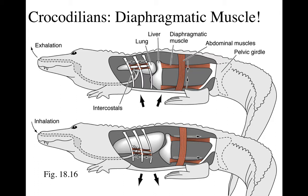Then we have crocodiles, which are really amazing. They do not have a mammalian diaphragm, but sometimes they can really put out bursts of energy. What they have is called a diaphragmatic muscle — and you'll never believe it — it's attached to the liver. The liver is what they use to expand their lungs. When they want to take a huge deep breath, they contract that diaphragmatic muscle, which pulls the liver back, causing the lungs to expand.